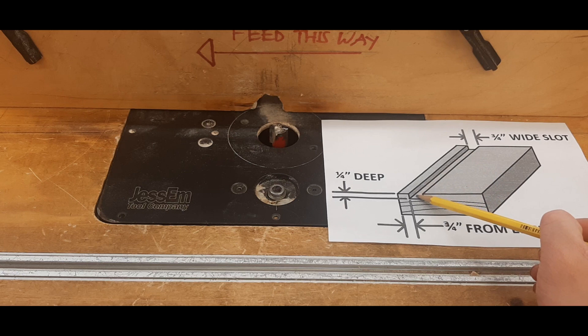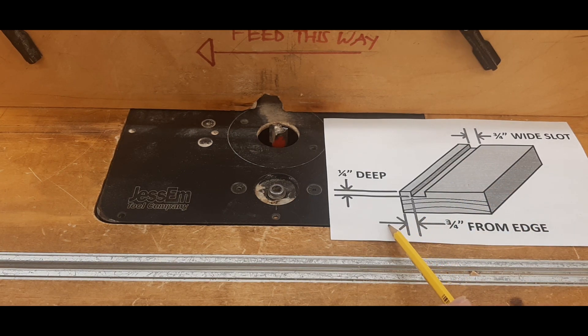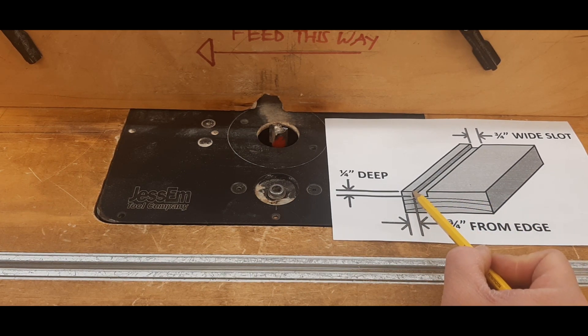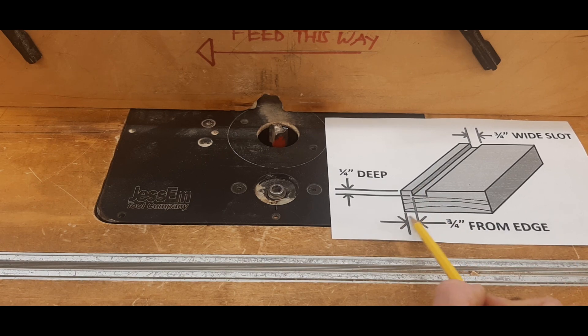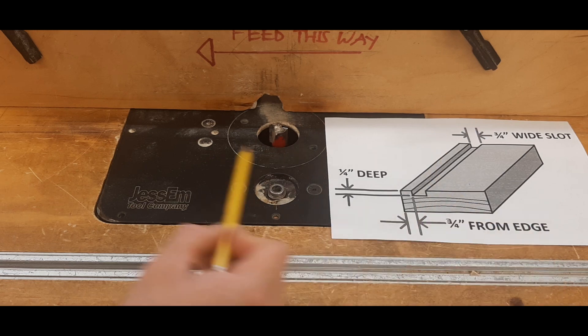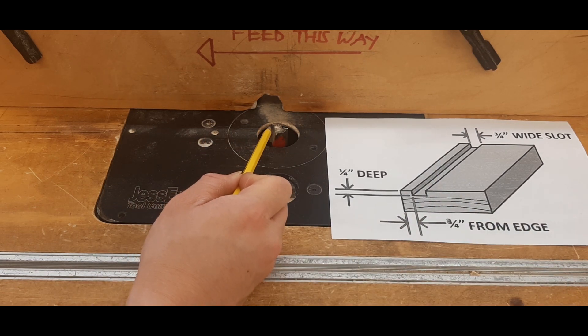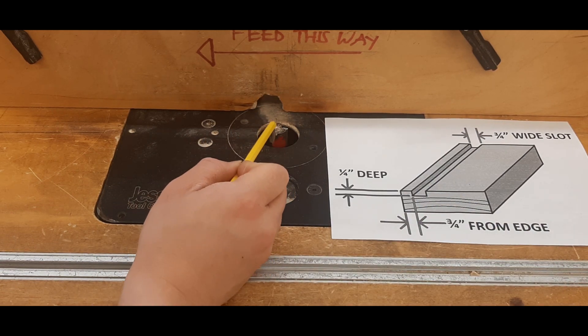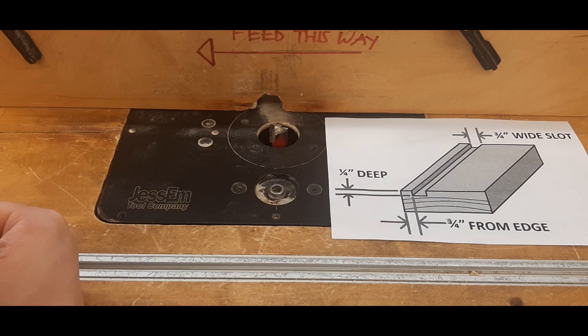In this example here, if I wanted to make this groove, I would need to make sure that this edge of the slot is three quarters of an inch away from this edge over here. So the distance between the router bit and the fence should be three quarters of an inch.